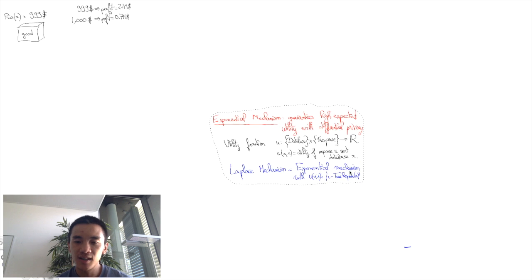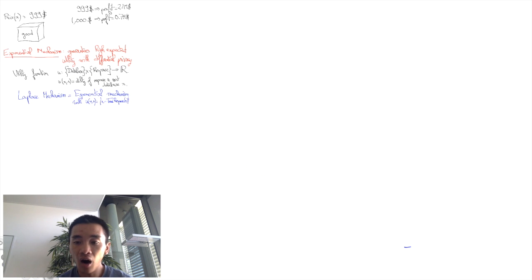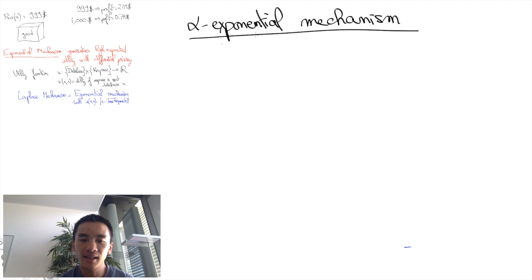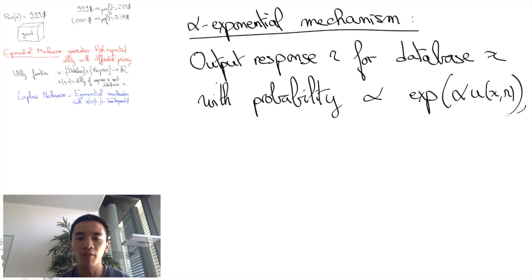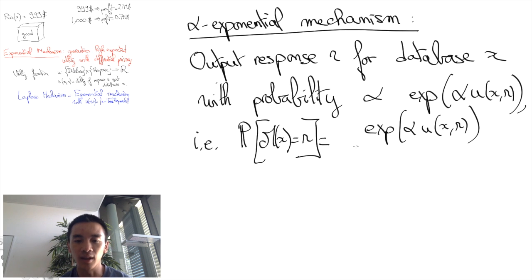And the key to that is to output an answer r for a database x with a probability that is exponentially large in the associated utility u(x,r). That is, we are going to define the probability that M(x) equals r to be equal to the exponential of alpha times u(x,r). So this is really exponential in the utility, and we have to renormalize it.